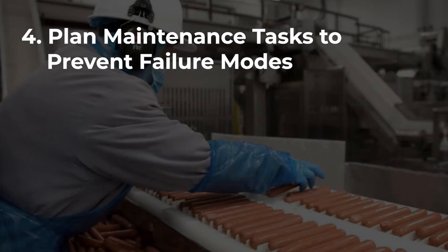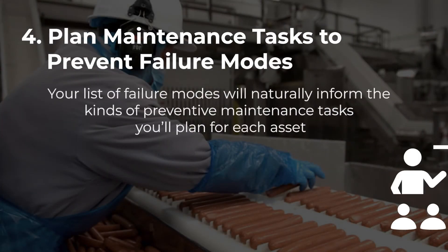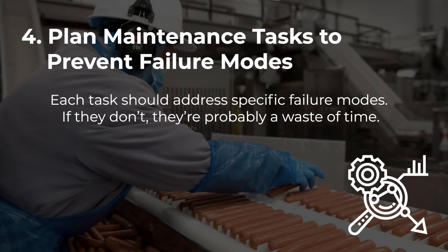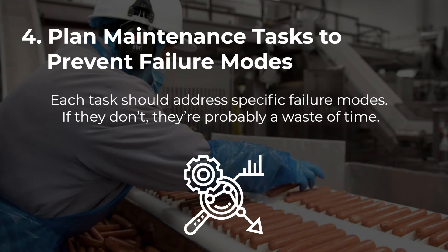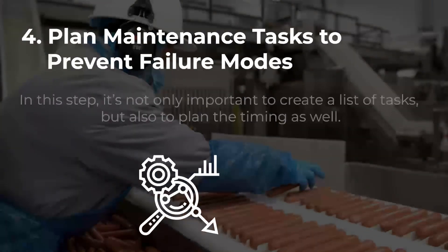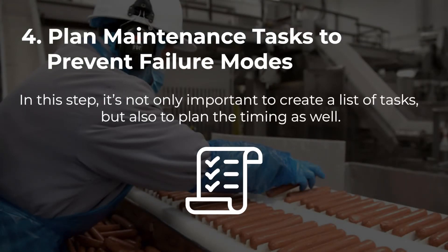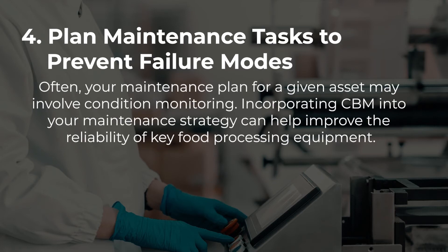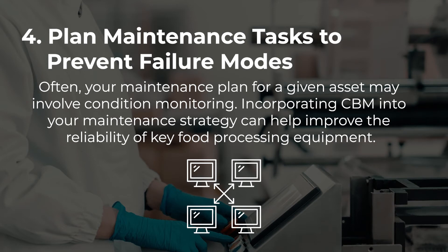Plan maintenance tasks to prevent failure modes. Your list of failure modes will naturally inform the kinds of preventive maintenance tasks you will plan for each asset. Each task should address specific failure modes, and if they don't, they are probably a waste of time. In this step, it's not only important to create a list of tasks, but also to plan the timing as well. Often, your maintenance plan for a given asset may involve condition monitoring. Incorporating condition-based monitoring into your maintenance strategy can help improve the reliability of key food processing equipment.